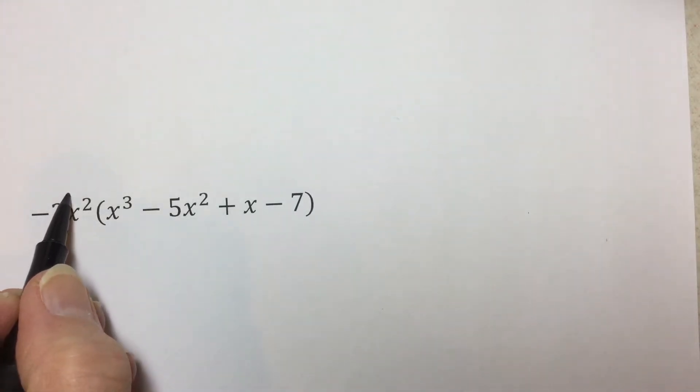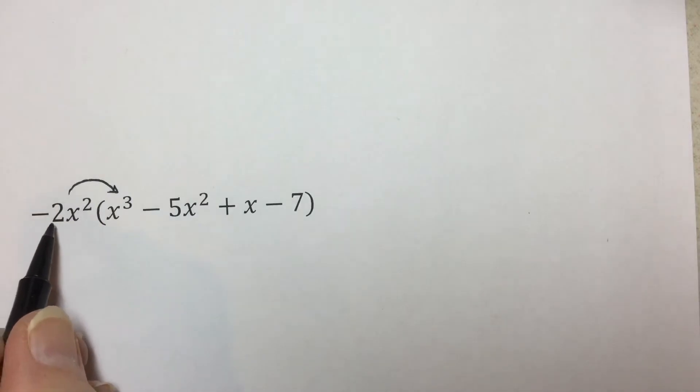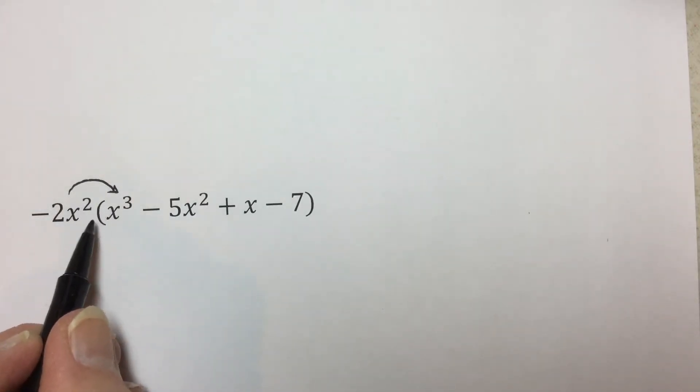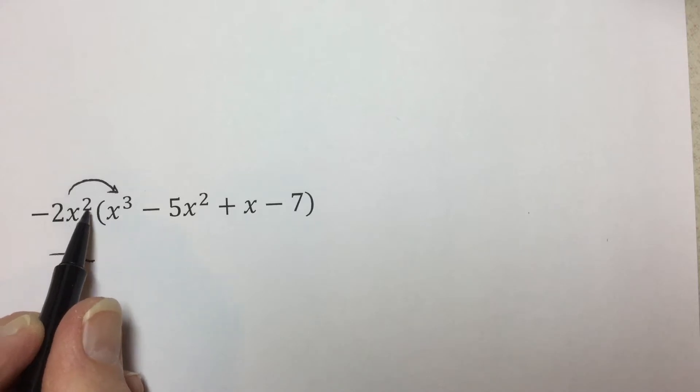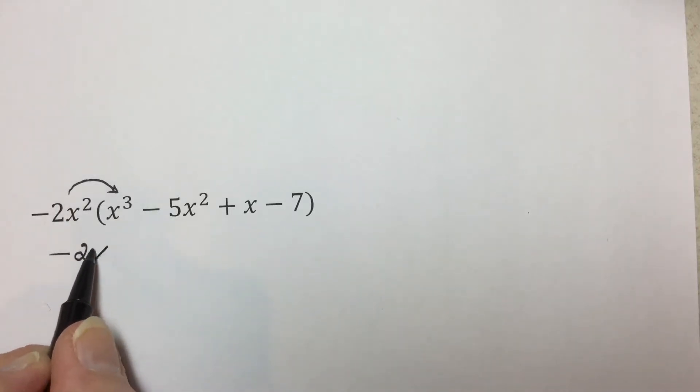Multiplying the first two terms together, there's no other constant other than the negative two times one, which isn't going to change that, and we have the common base of x to the second times x to the third, which results in x to the fifth when you add the exponents together.